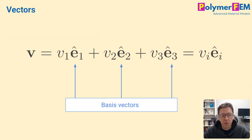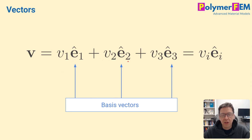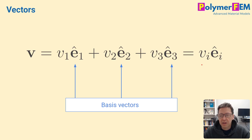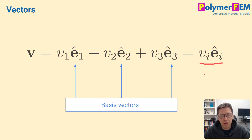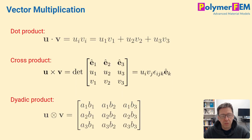What I want to do today is start very basic — talking about vectors. A vector can be described using basis vectors with components in those basis directions, representing a quantity in three-dimensional space. When we write these equations, we often use the Einstein summation rule: when a subscript is repeated in a quantity, it is summed over. So if i is a repeated subscript, it is summed over — a very common shorthand.